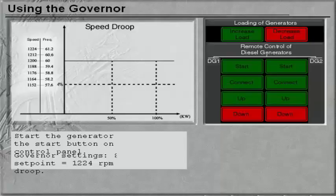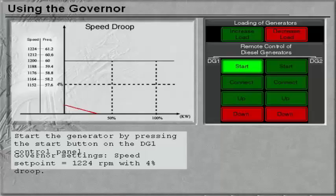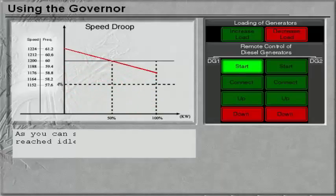Start the generator by pressing the Start button on the DG1 control panel. As you can see, the generator has reached idle speed.